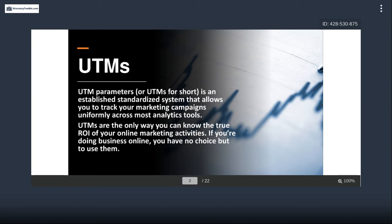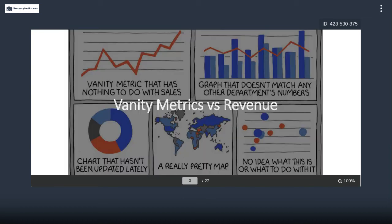Frank asked what UTM stands for — it stands for Urchin Tracking Module. Urchin was one of the big analytics companies of the past that got bought by Google. When Google started releasing Google Analytics, this is the system they used to track different parameters. Because it became the standard and you can add it to any URLs, all systems started using it. But the only way to use them is to actually have those parameters turned on in your links.